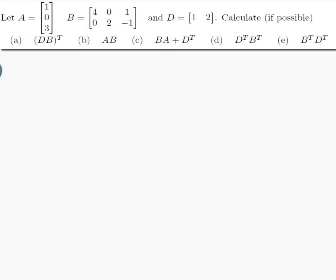The question is, let A be the matrix 1, 0, 3 as a column, B be the matrix 4, 0, 1 and then 0, 2, minus 1, and let D be the matrix 1, 2 as a row.